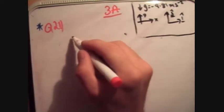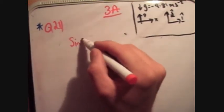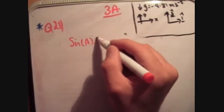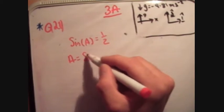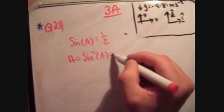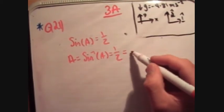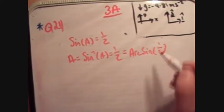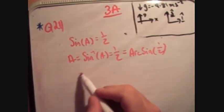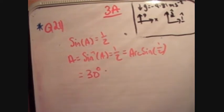So the first thing is to find out what is a. So if sine a is equal to half, a is equal to inverse sine of a half, which is equal to arc sine. Remember, inverse sine and arc sine are the same thing, and you're going to get your angle of 30 degrees.